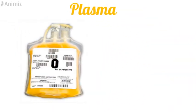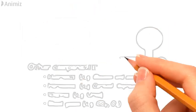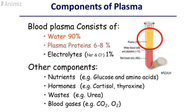First is the plasma. It is a pale yellow colored liquid component of the blood that holds the cellular elements of blood in suspension form. The plasma consists of 90% water, 6 to 8% plasma proteins, and 1% electrolytes like sodium and chloride. It also consists of other components like nutrients such as glucose and amino acids, hormones like cortisol and thyroxine, waste products like urea, and blood gases like carbon dioxide and oxygen.